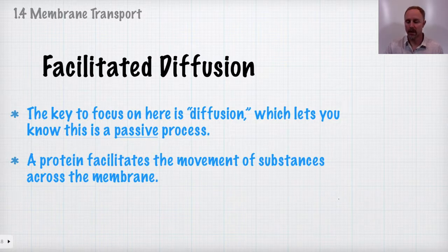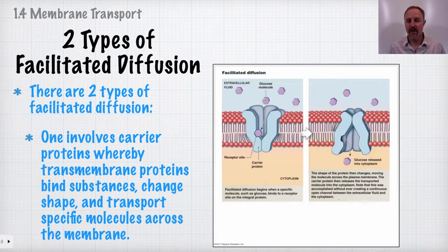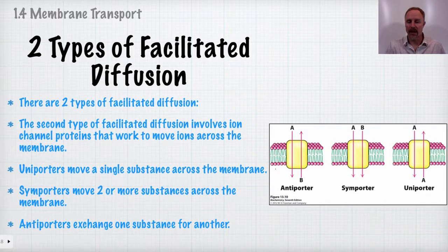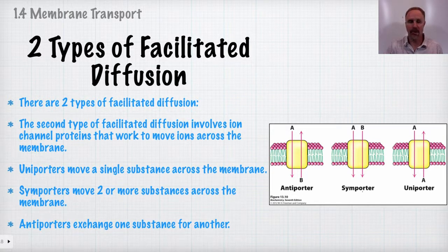Facilitated diffusion is a passive process — focusing on the word 'diffusion.' A protein facilitates the movement of a substance across the membrane, but it is still passive. There are two types: a carrier protein that changes shape to allow molecules to cross, and channel proteins that allow ions or molecules to move freely down the concentration gradient. There are uniporters, which move one substance; antiporters, which exchange two different substances; and symporters, which move two substances across simultaneously.